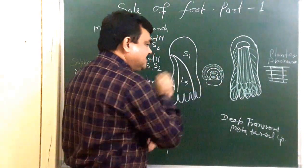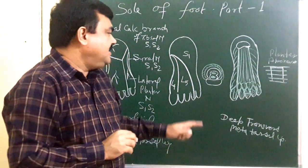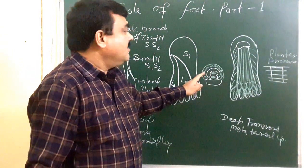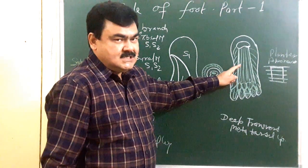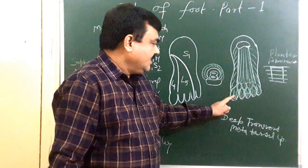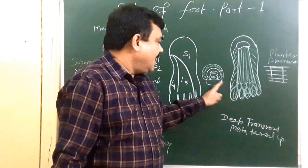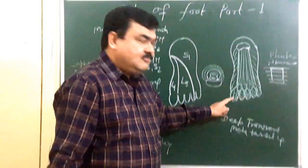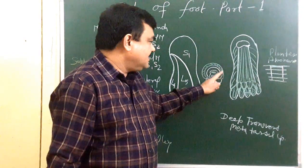So these are modifications of the deep fascia. The deep fascia modified from the plantar aponeurosis, medial and lateral plantar fascia. Here is deep transverse fascia and here is fibrous flexor sheath.